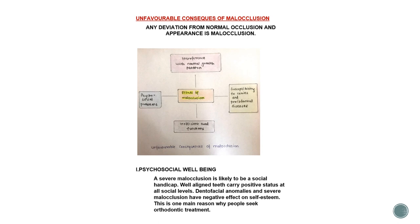Moving on to the unfavorable consequences of malocclusion. Any deviation from normal occlusion and appearance is malocclusion — normal occlusion means you can bite your teeth properly. There are four consequences: interference with the normal growth pattern, psychosocial problems, insufficient oral functions, and susceptibility to caries and periodontal disease.